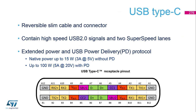On the picture you are able to see the signals inside a USB cable with a reversible connector. In total it has 24 pins, with four dedicated for VBUS and four for ground.